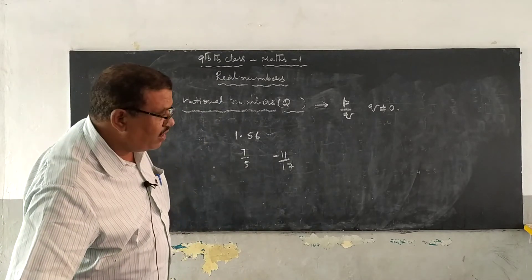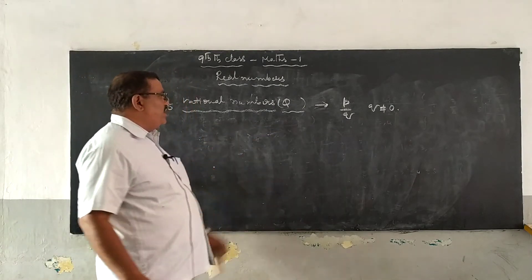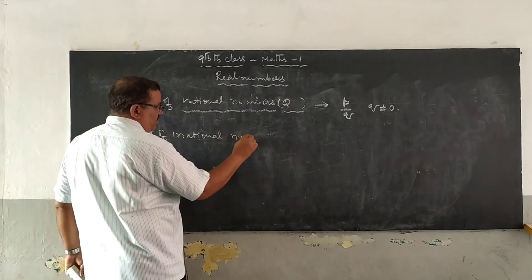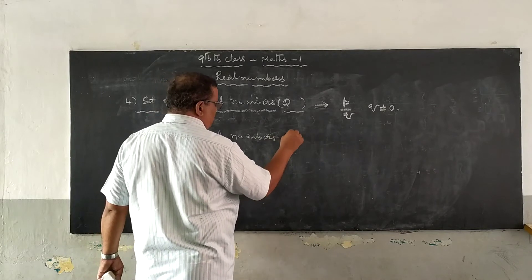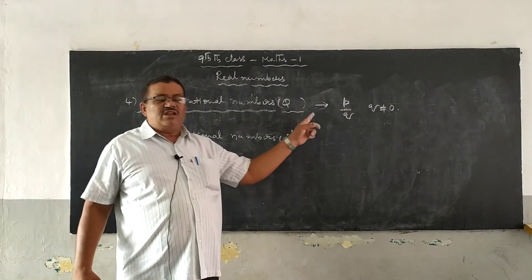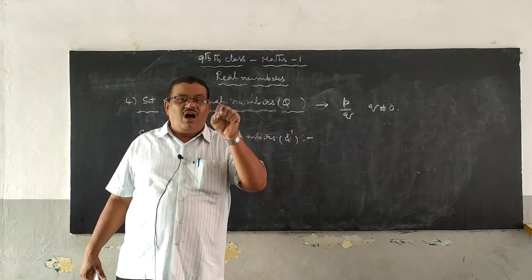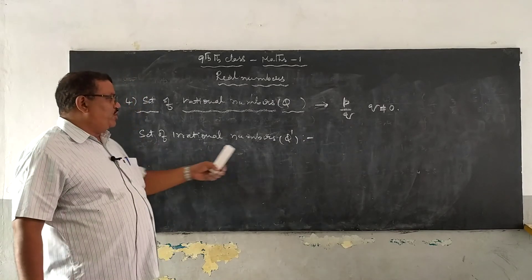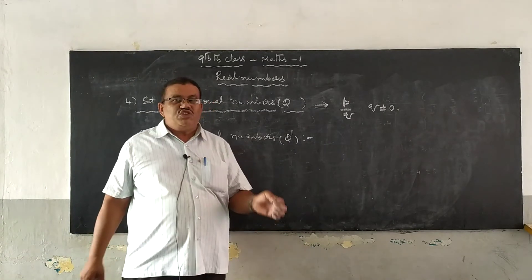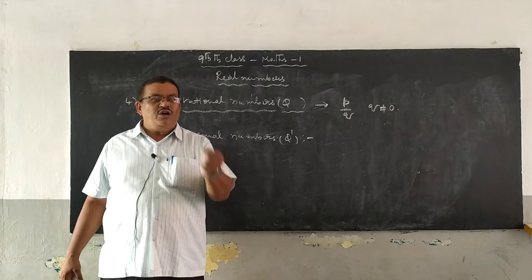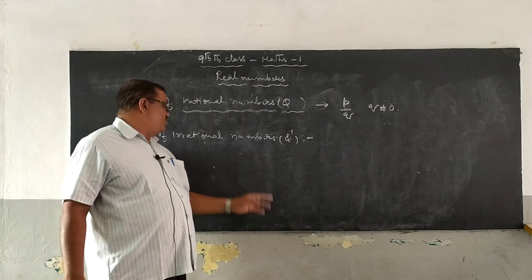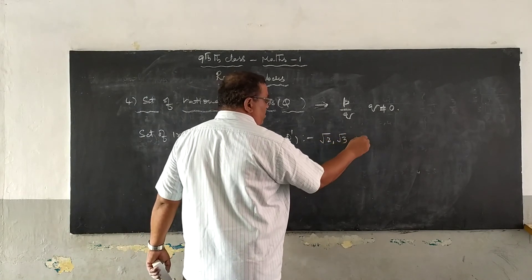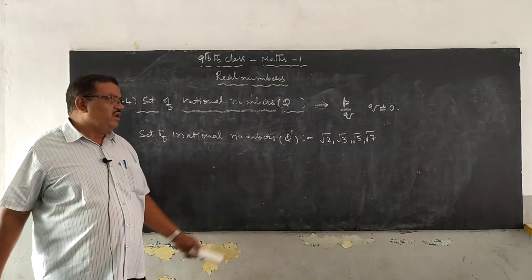Next, the set of irrational numbers. What are irrational numbers? Before explaining, I should say more about rational numbers: every rational number can be expressed as either a terminating decimal or a non-terminating repeating (recurring) decimal. But irrational numbers are different — they are denoted by Q'. These numbers are not in the form of p/q and are non-terminating, non-repeating. Examples are √3, √5, √7 — these are all irrational numbers.